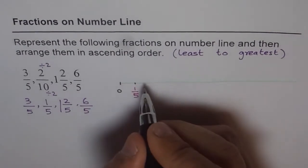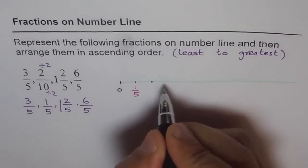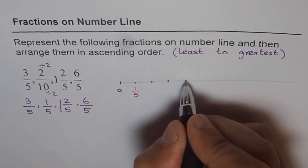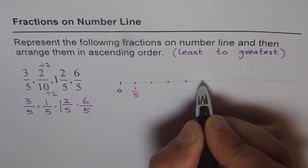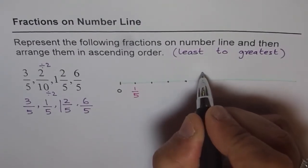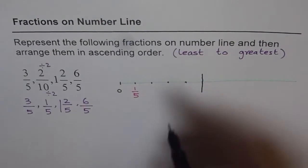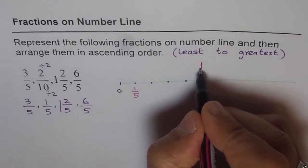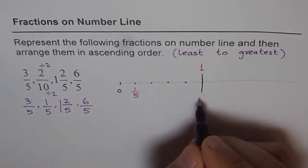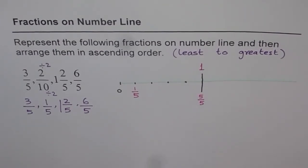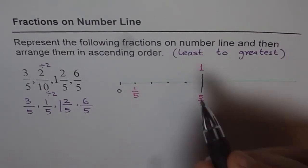So 1 out of 5 then that becomes 2 out of 5, 3 out of 5, 4 out of 5 and then 5 out of 5. 5 out of 5 will draw a bigger line. And we are saying that this is 1. Why it is 1? Since it is 5 out of 5. 5 out of 5 means the whole thing. So that becomes 1.